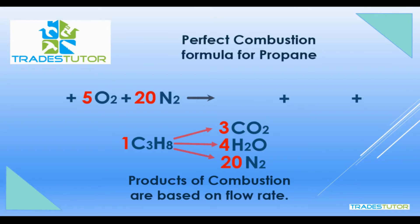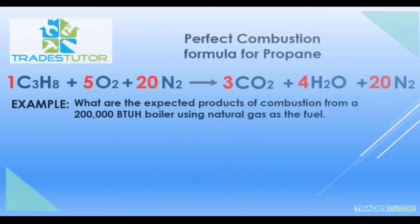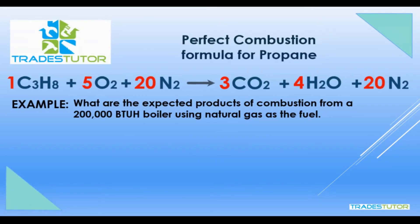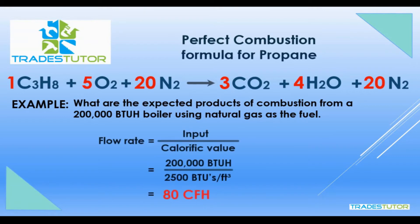What are the expected products of combustion from a 200,000 BTU per hour boiler using propane as the fuel? Before we even start calculating, we have to figure out our flow rate. The formula is: flow rate equals input divided by calorific value. The input is 200,000 BTUs per hour, and the calorific value we're going to use for propane is 2,500 BTUs per cubic foot. So the flow rate we get is 80 cubic feet per hour.